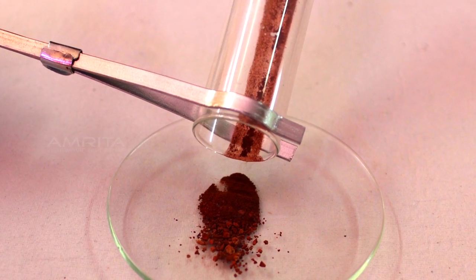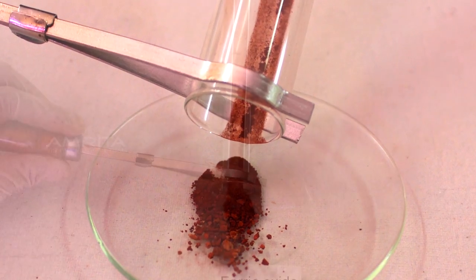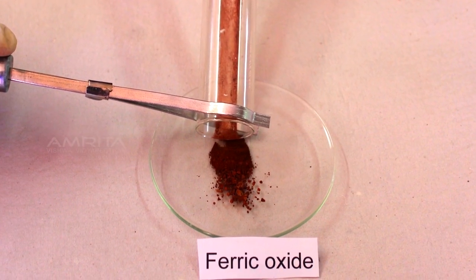Finally, transfer the dark brown substance in the boiling tube into a watch glass and label it as ferric oxide.